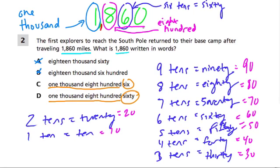So it's definitely D, 1,860. Now, notice they put this choice C here, 1,806. What would that look like? Well, we'd have 1,806.